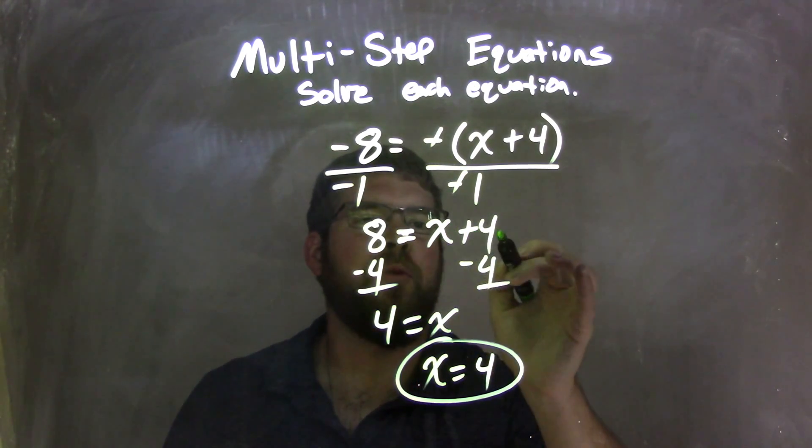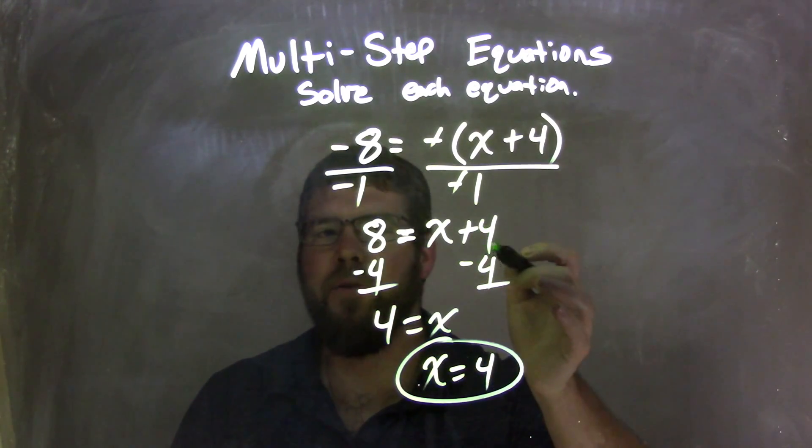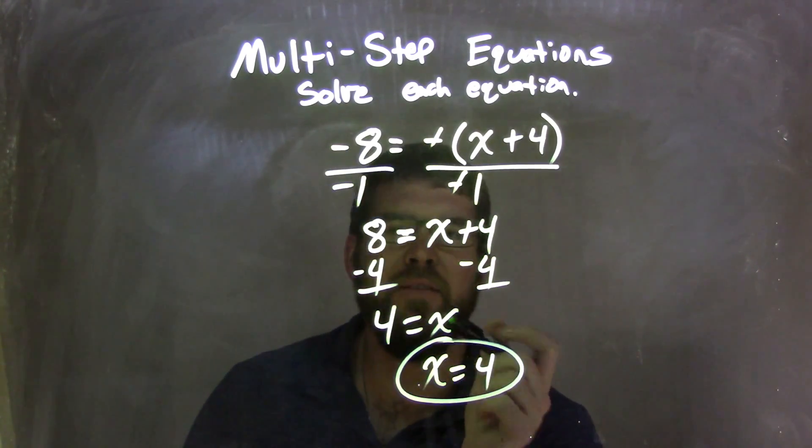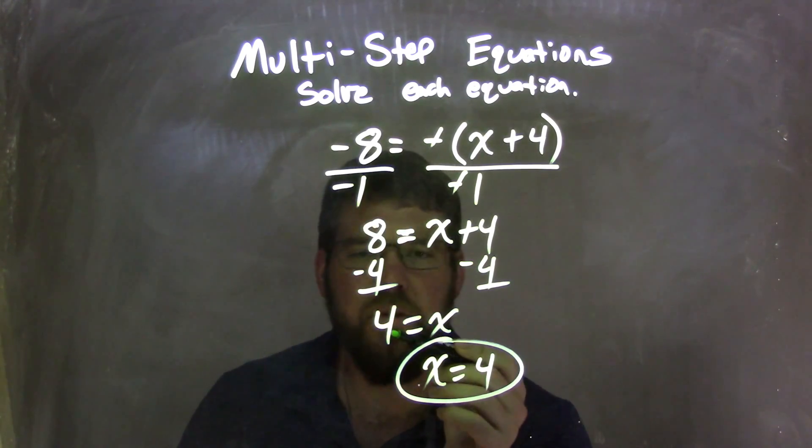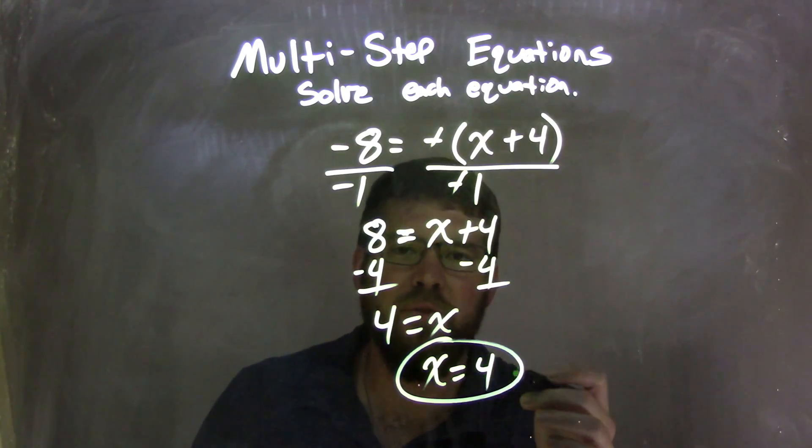So now I have 8 equals x plus 4. I'm going to subtract 4 from both sides to get rid of that plus 4. By doing so, it left me x by itself, and 8 minus 4 is just 4. Rearrange it to put x first, and so my final answer here is just x equals 4.